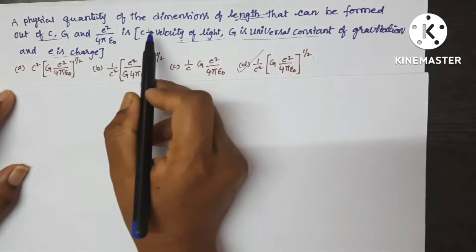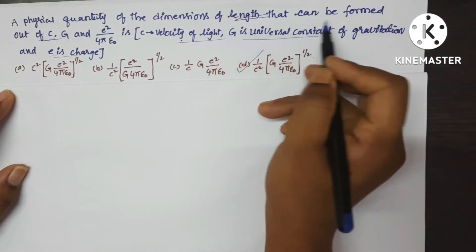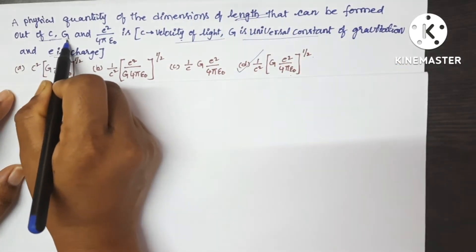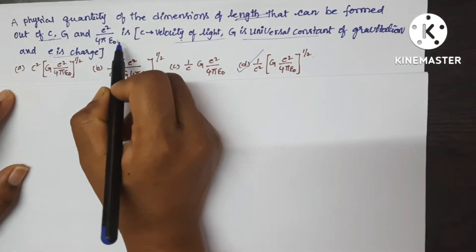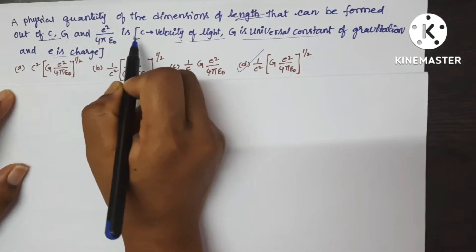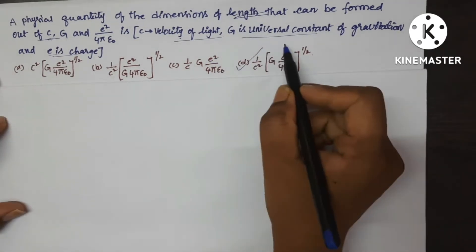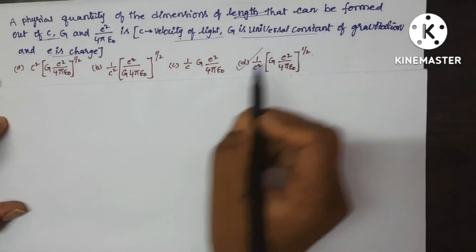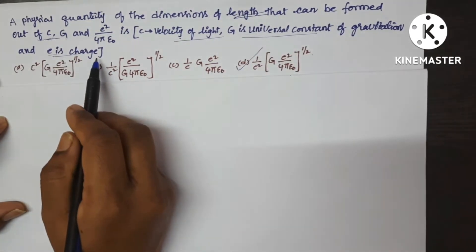A physical quantity of the dimensions of length that can be formed out of C, G, and E² upon 4πε₀ is — where C is the velocity of light, G is the universal constant of gravitation, and E is the charge.